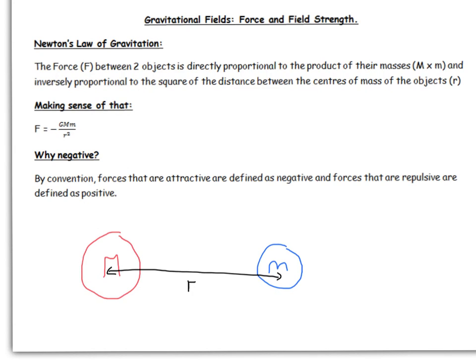Now, why is there a minus sign there? This is just convention. Attractive forces, which gravitational forces always are, are defined as a negative force, and repulsive forces are defined as being positive. So that's where this comes into it here. We'll look later on that we get rid of the minus sign most of the time.